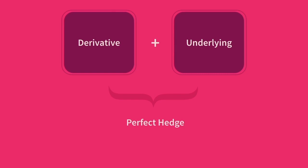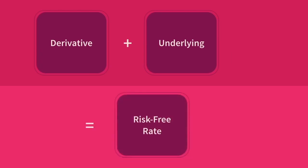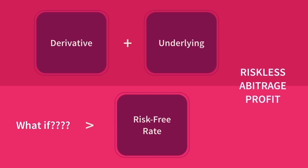It logically follows, therefore, that holding this risk-free portfolio should result in the investor earning exactly the risk-free rate over the life of the derivative contract. Now, if more than the risk-free rate is earned by holding this portfolio, then an investor could go long the hedged position and borrow at the risk-free rate to earn a riskless profit.